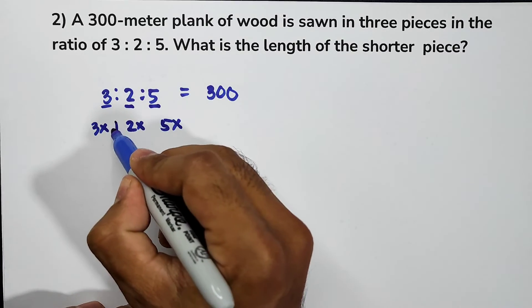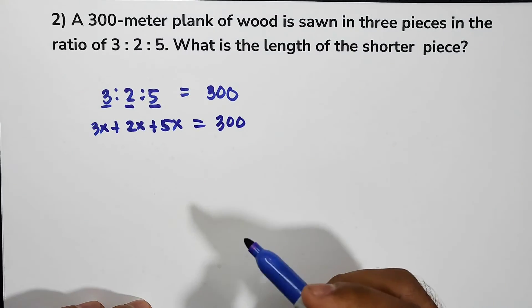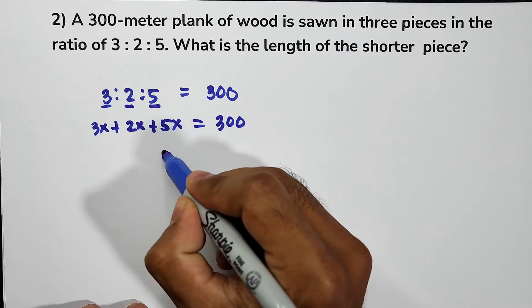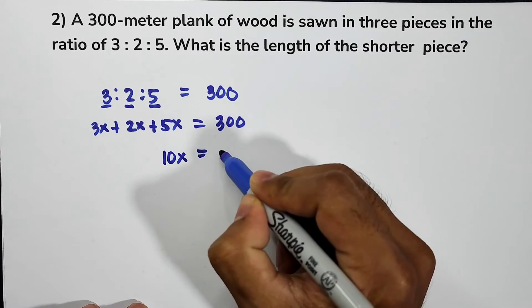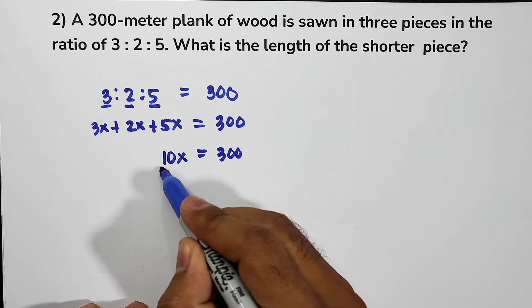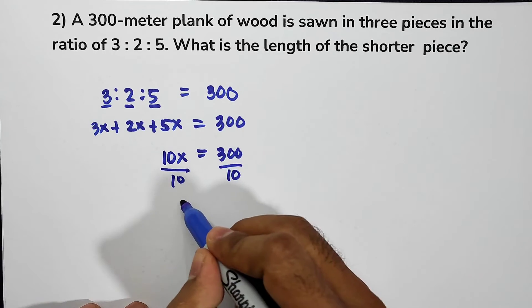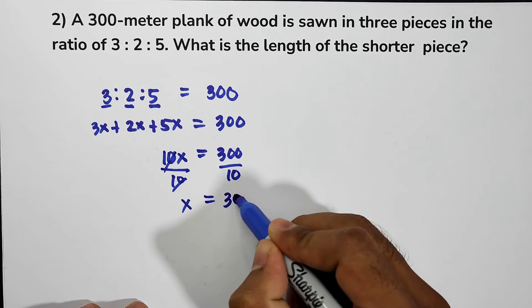Then add. That is equal to 300. And then now, 3 plus 2 plus 5, that is equal to 10, and then write x. Then rewrite 300. Now, we can solve for the value of x by dividing both sides by 10. So x now is equal to 30.